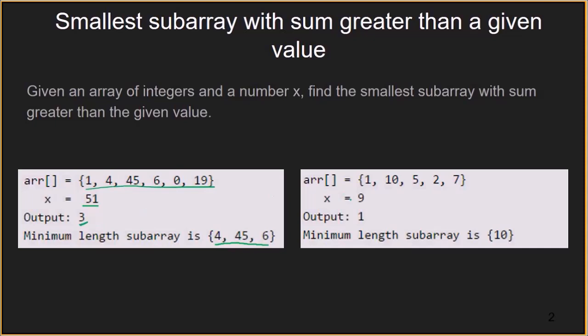Similarly, in this second array, we have to find out the smallest subarray whose sum is greater than 9. Here we have an element of value 10 which is greater than 9, and thus the smallest subarray contains only one element.